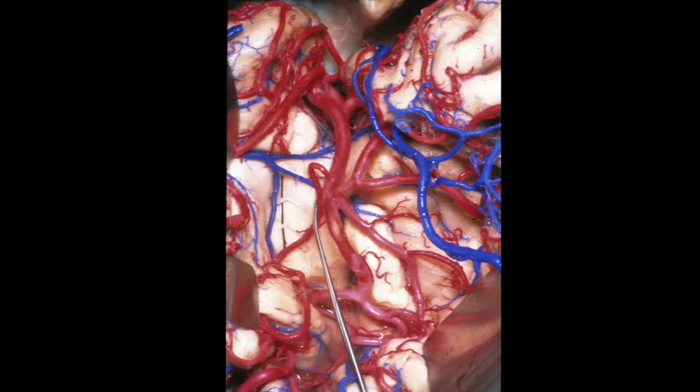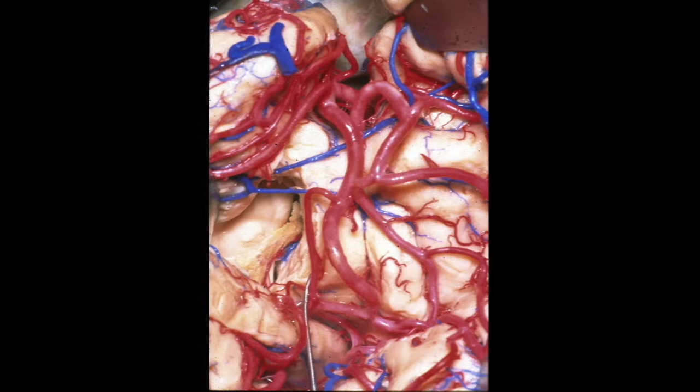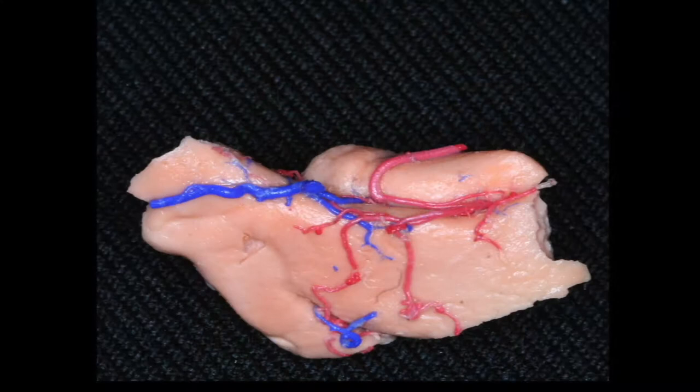Here we simulate the approach. It's a transsylvian approach. The sylvian fissure has been opened. We identify the inferior insular sulcus. We have to mobilize the temporal branches and access into the temporal horn of the ventricle, then extend this anteriorly to perform the lateral disconnection of the medial temporal lobe, then the medial disconnection to the choroidal fissure to finally get the medial temporal lobe, anterior portion, completely removed.